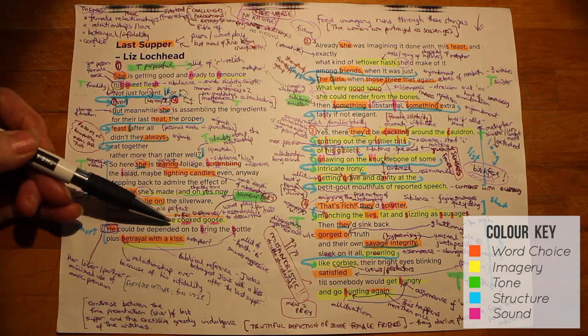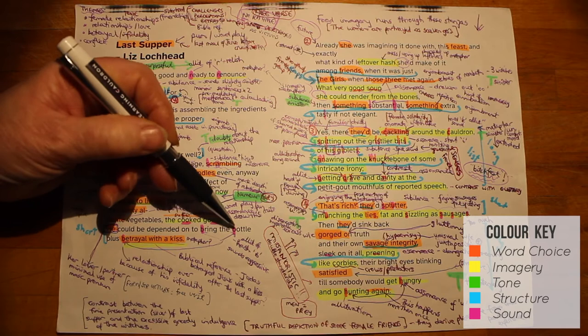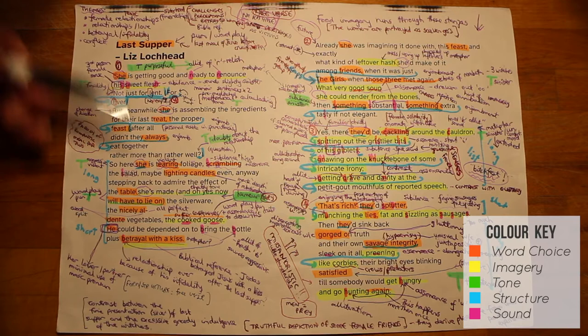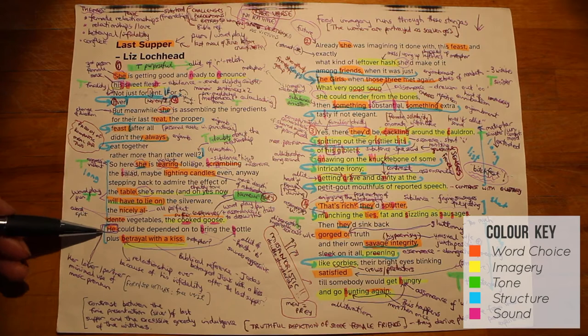The next sentence starts with an emphatic he, third person masculine pronoun, which is obviously referring to the lover or the partner that she's preparing the meal for, and we've got a lovely alliteration here of bring the bottle plus, unexpectedly, betrayal with a kiss. And this is another reference to the Last Supper, when Judas betrayed Jesus by kissing him. In the same way, the reader is led to believe that the partner has betrayed the persona in the poem. It's interesting to note that the masculine third person pronouns do not appear often. There are far more she's and they's referring to the friends later on, so he gets minimal coverage.